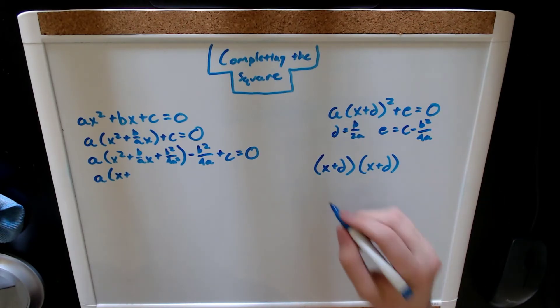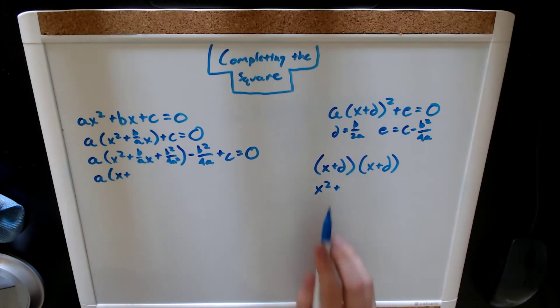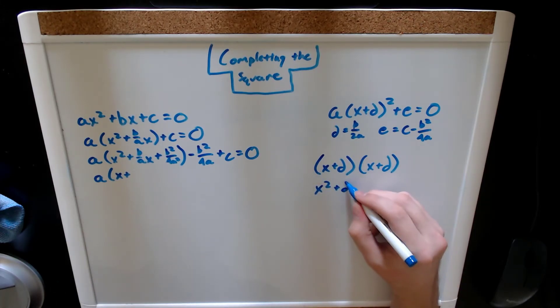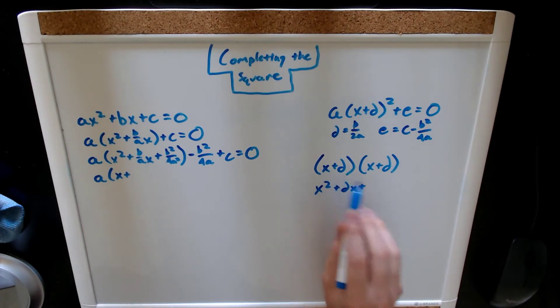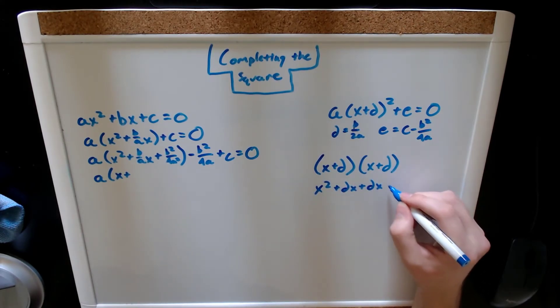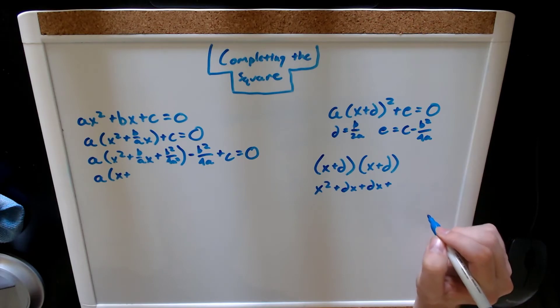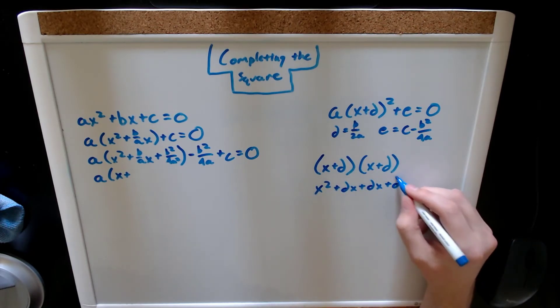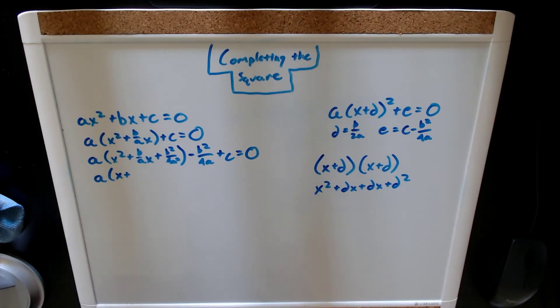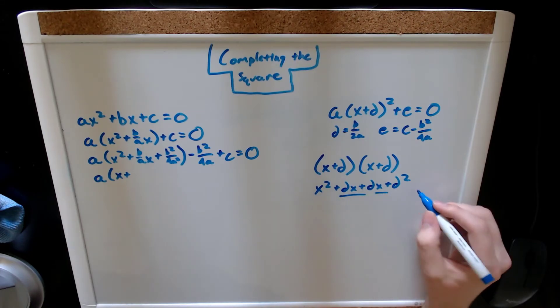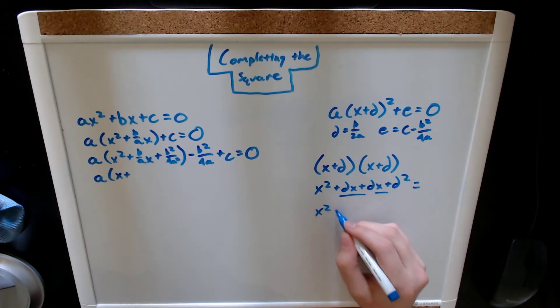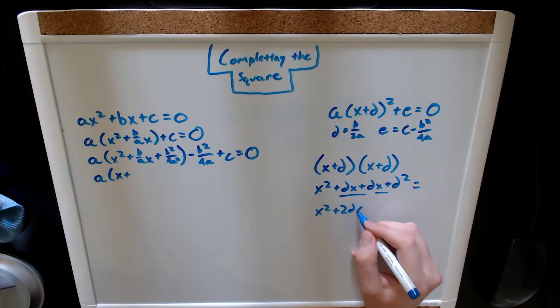So, our first is x times x, or x squared. Our outer is x times d, which is dx. Our inner is dx, again, and our last is d times d, or d squared. If we combine like terms, we get x squared plus 2dx, because we have two of them, plus d squared.